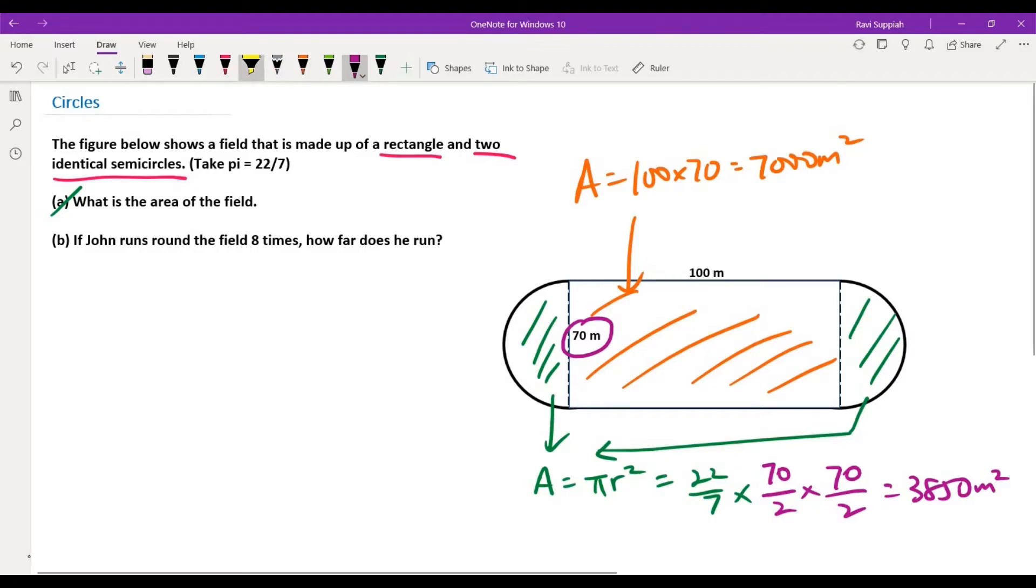So for part A, we can say that the area of the field is given as 7000 plus 3850, which will give us 10,850 meter square. So that's the answer for part A.